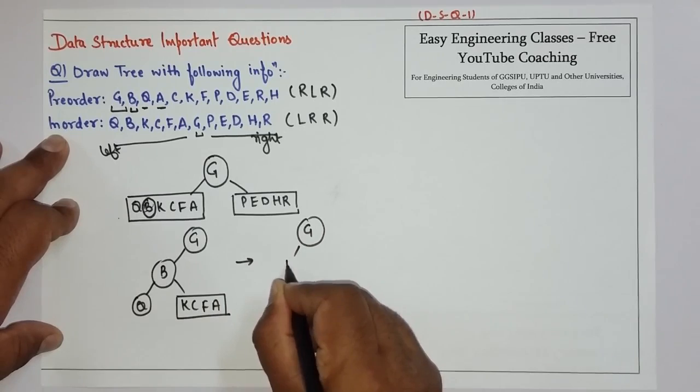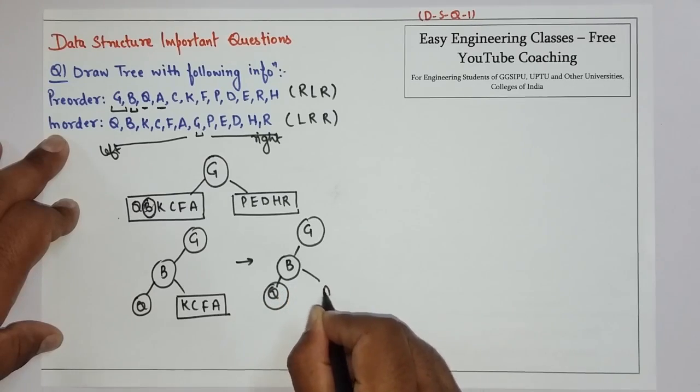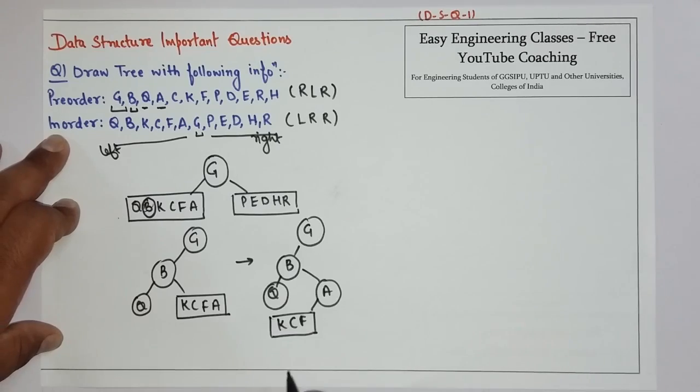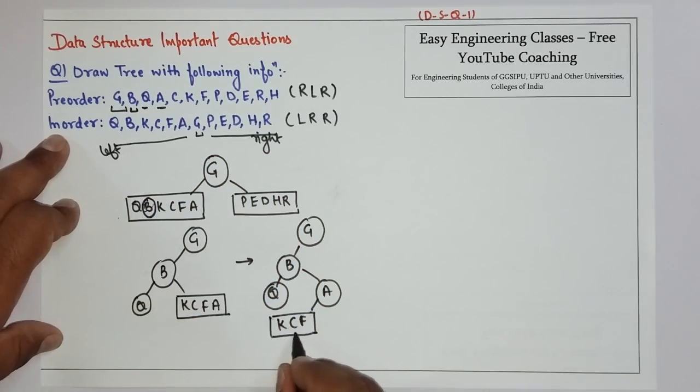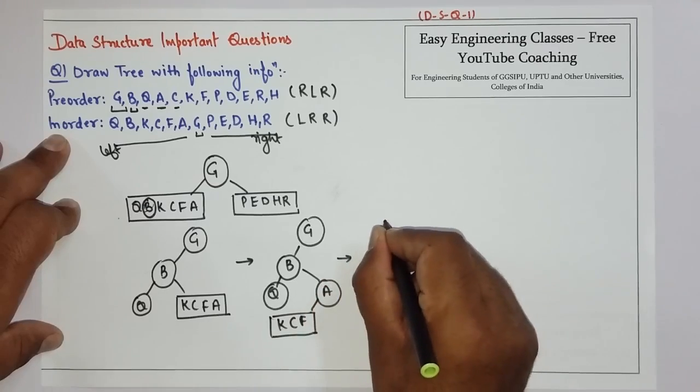G, B, Q, A, K, C, and F. Then again look for the root in this. C is the root, so this will become like this.